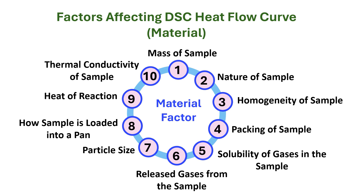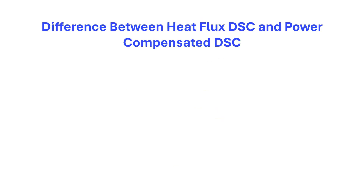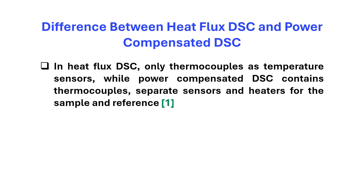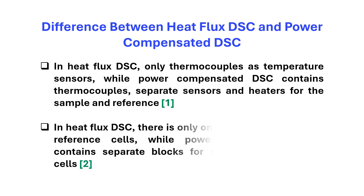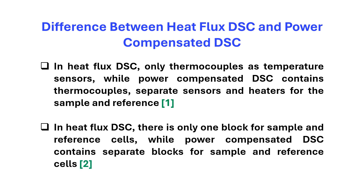The main differences between heat flux DSC and power compensated DSC are: in heat flux DSC, only thermocouples are used as temperature sensors, while power compensated DSC contains thermocouples plus separate sensors and heaters for the sample and reference. In heat flux DSC there is only one block containing both sample and reference cells, while power compensated DSC contains separate blocks for the sample and reference cells.